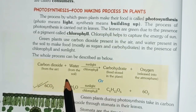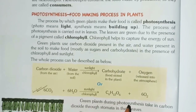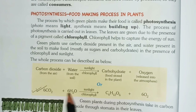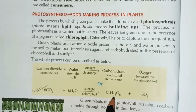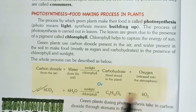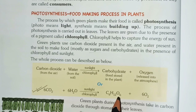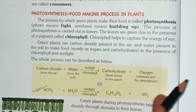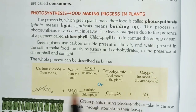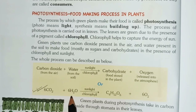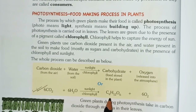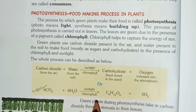The chemical reaction for photosynthesis is: CO₂ (carbon dioxide) + H₂O (water), in the presence of chlorophyll and sunlight, produces C₆H₁₂O₆ (glucose/carbohydrate) + O₂ (oxygen). Carbohydrates contain carbon, hydrogen, and oxygen elements, which you learned in Class 6.